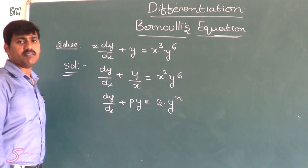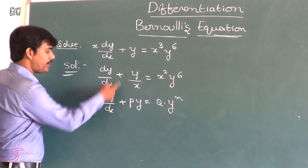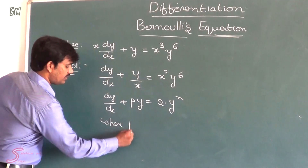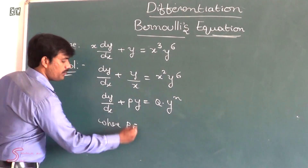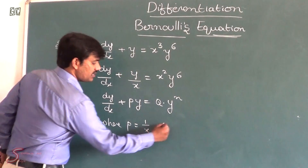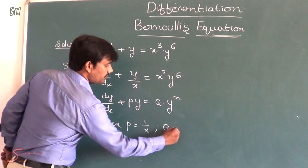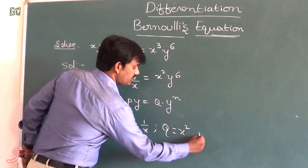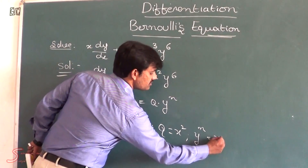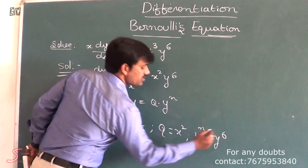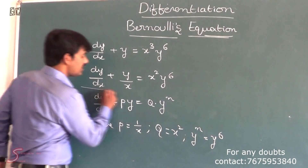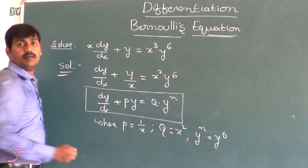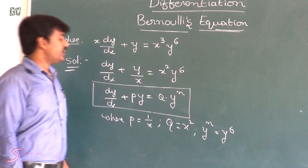Comparing dy/dx + p·y = q · yⁿ with our equation, the value of p is 1/x, the value of q is x², and the value of n is 6 (y power 6). This is the notation for Bernoulli's equation.